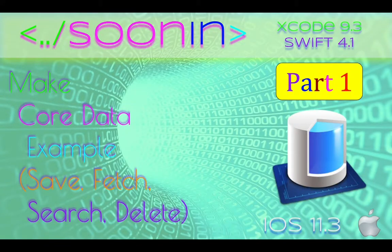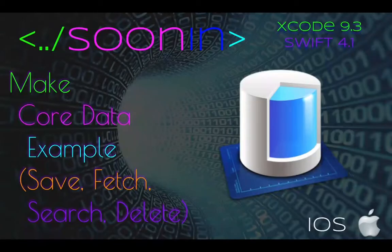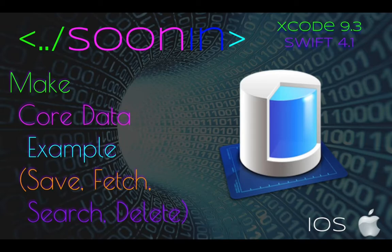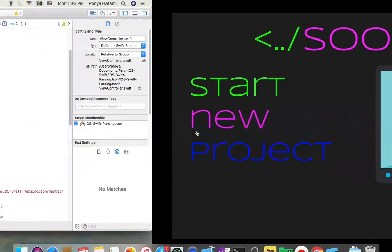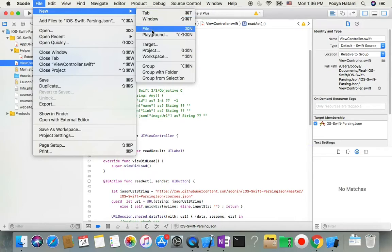Hey guys, welcome back! Today we're going to be talking about how you can make a Core Data project including save, page search, and delete. During this video, first of all we will review how you can make a project and prepare the user interface and your Core Data database. Then in the next videos we will review how you can save, search, and delete data inside Core Data. Today we will use Xcode version 9.3, iOS 11, Swift 4.1, and simulator iPhone 10.